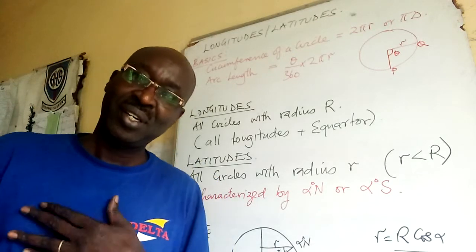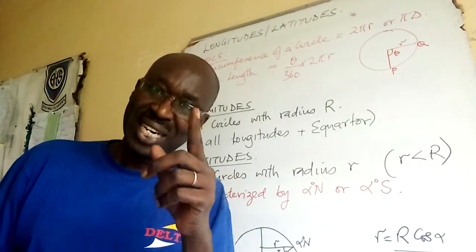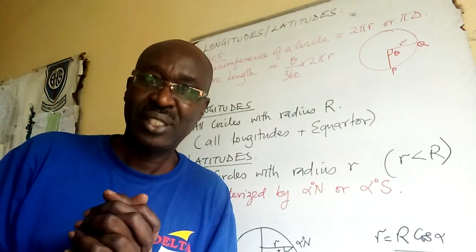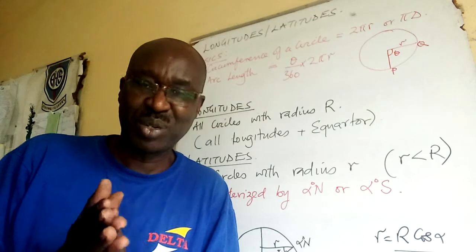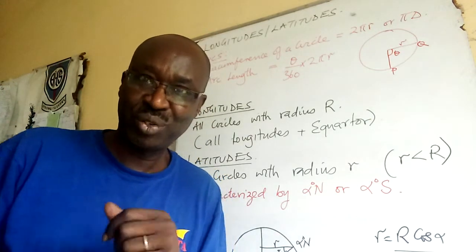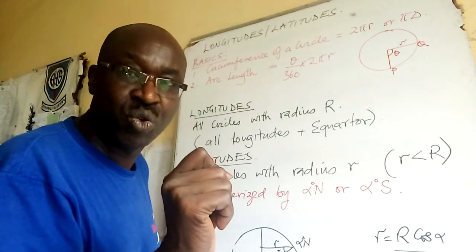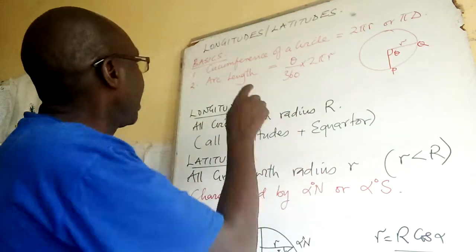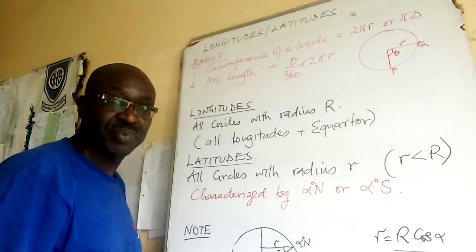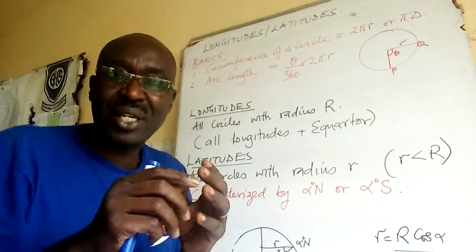Welcome folks, we are going to learn about longitude and latitude. This is Form Four mathematics, and mostly you can get it in paper two — it can cost you 10 marks, so pay attention. This is the second lesson; I will now do calculations. This is just to jog your mind on the basics, and those basics are very important — they are the tools that you need.